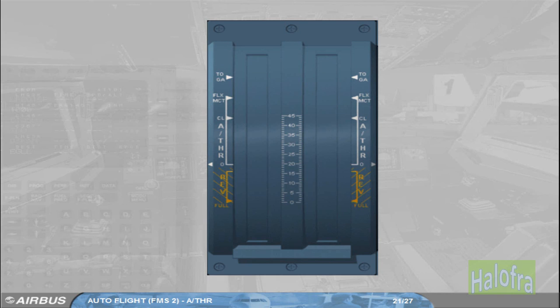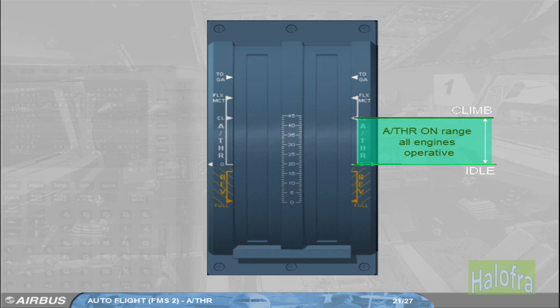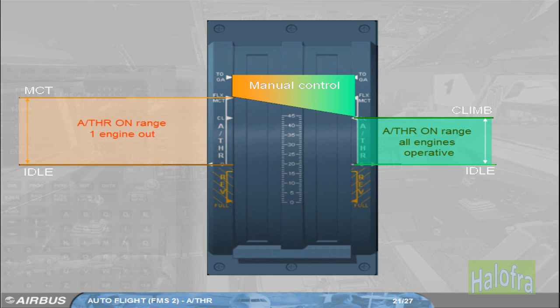Note that the Autothrust may be on in flight provided the thrust levers are set above idle to climb detent, all engines operating, or above idle to MCT, one engine inoperative. Beyond these detents, the pilot has manual control on the thrust.